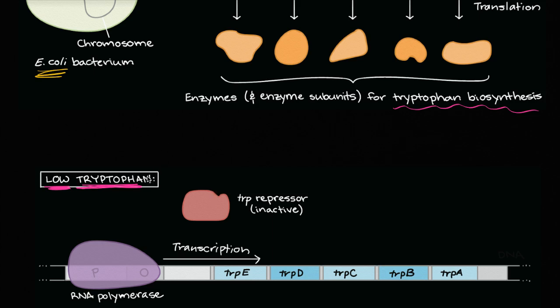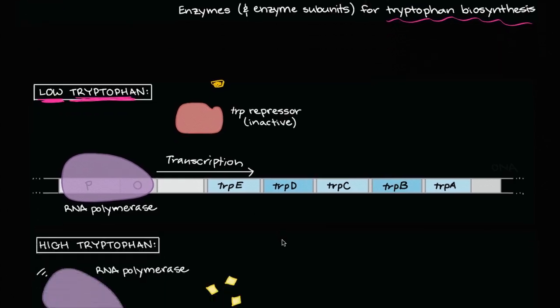And so when you have tryptophan around, you probably don't want this transcription to occur. So it would make sense that maybe tryptophan can act as a co-repressor for a repressor molecule, for a repressor enzyme, that would attach to the operator and block the RNA polymerase from transcribing. And that's exactly what happens.